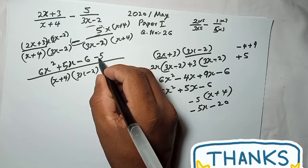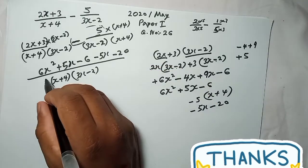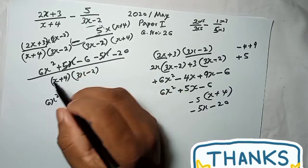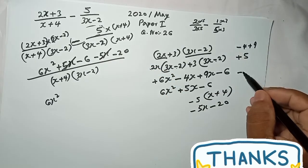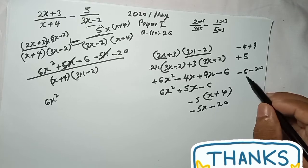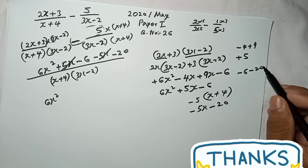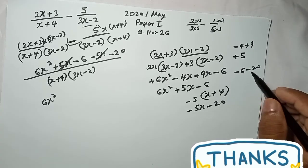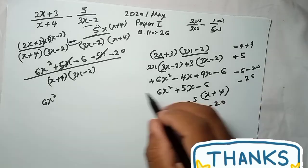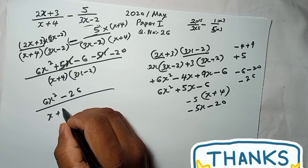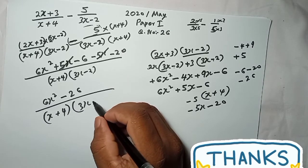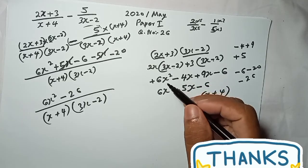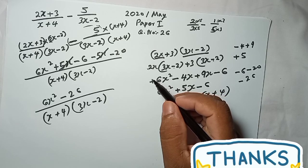Now combine: 6x² + 5x − 5x cancels out. Then −6 − 20: same sign, so add them: −26. The final answer is 26 over (x+4)(3x-2). That's the answer to this last question of the 2020 May/June Paper 1.